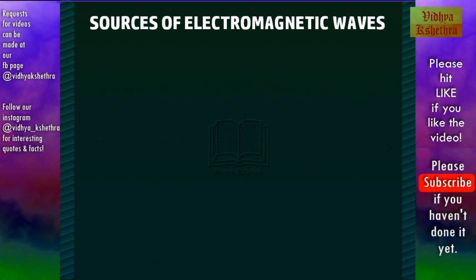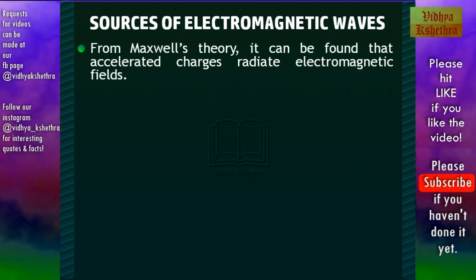Now we can see the sources of electromagnetic waves — what produces electromagnetic waves. A stationary charge does not produce electromagnetic waves. A constant current also does not produce electromagnetic waves. A charge in uniform motion only produces a magnetic field. But from Maxwell's theory, accelerated charges radiate electromagnetic fields.